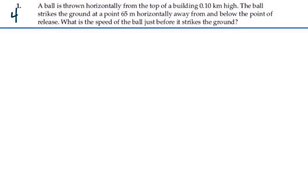Here's problem 401. A ball is thrown horizontally from the top of a building 0.1 kilometers high. The ball strikes the ground at 0.65 meters horizontally away from below the point of release. What is the speed of the ball just before it strikes the ground?